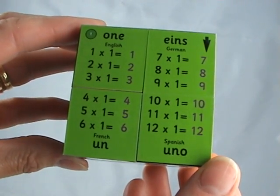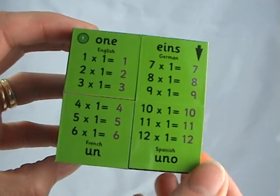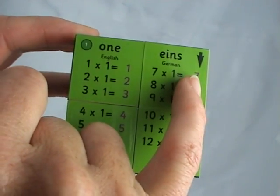This is a multiplication times tables cube. Starting at the green dot, you follow the arrows around the cube.